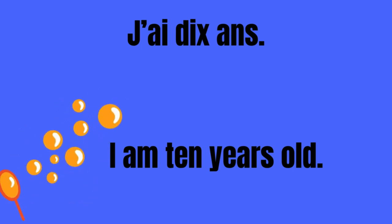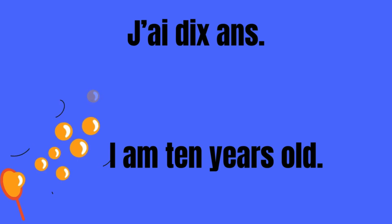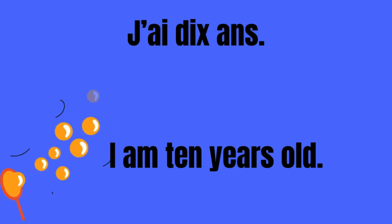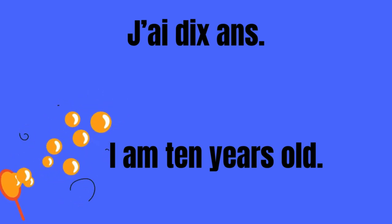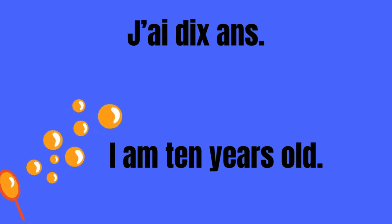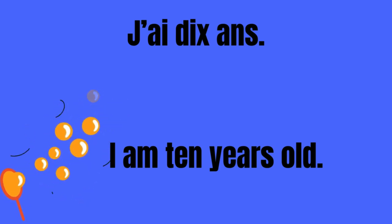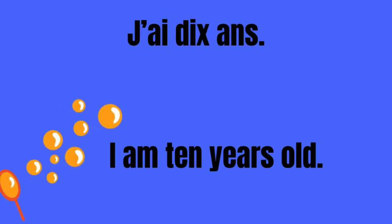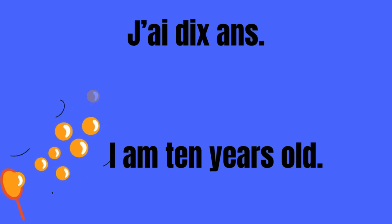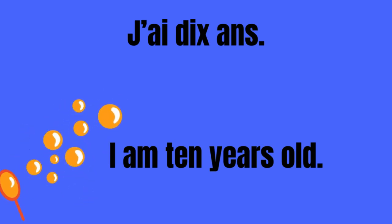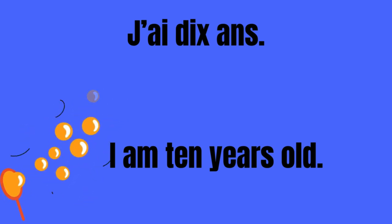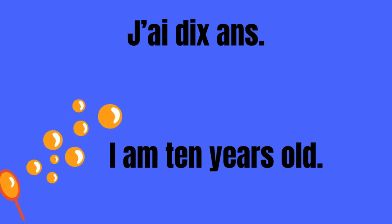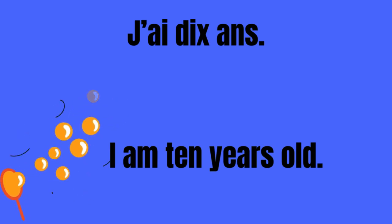So, in French, the difference is that when you're talking about age, in English you use the verb to be, but in French you use the verb to have. Normalement, en anglais, on dit pas j'ai, on dit I am, je suis. Ok?